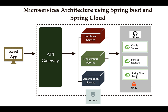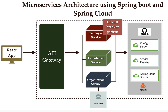Once we know how to implement distributed tracing, we are going to create a simple React application that makes HTTP calls to the backend microservices. We will also implement the circuit breaker pattern in the employee service, because employee service internally calls department service. If department service is down, employee service won't get a response, and it would return an internal server error to the API gateway and then to the client. To avoid this, we use the circuit breaker pattern.